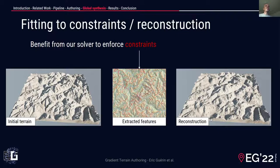Our solver can combine hard constraints with soft constraints. Here, we extracted the crest and riverbed lines of an input terrain. These lines were used to prescribe hard elevation constraints. In addition, we generated a tensor-oriented noise to simulate erosion patterns. This process allowed us to approximate the original terrain using very sparse information encoded in the hard and soft constraints.